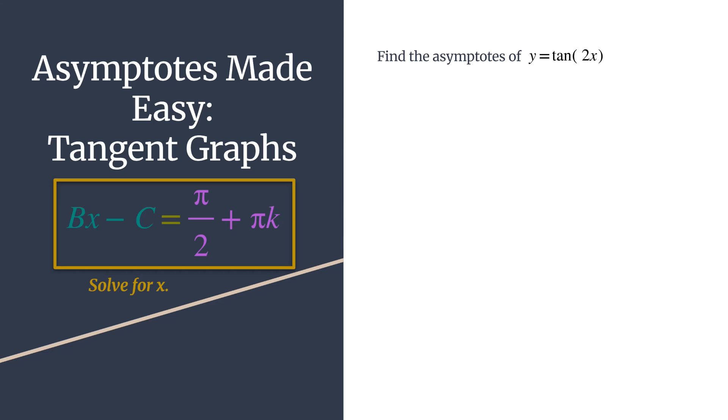Today we'll look at a really easy way to find the vertical asymptotes from a tangent equation. All you have to do is take the horizontal transformations and set them equal to the parent asymptotes from tangent, x, so that's π/2 + πk.